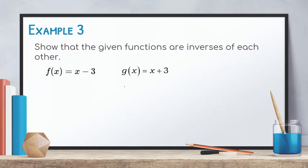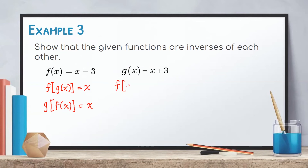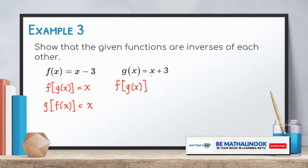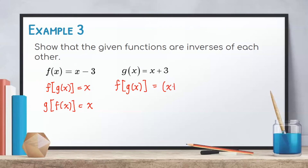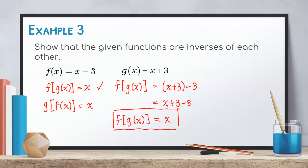To determine that they are inverses of each other, we verify that f of g of x equals x and g of f of x also equals x. For f of g of x, we substitute the entire g of x into the x of f of x. Hence, we have x plus 3 minus 3. Simplifying, positive 3 minus 3 equals 0, so we have x. Therefore, f of g of x is equal to x, and the first condition is satisfied.